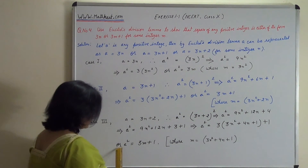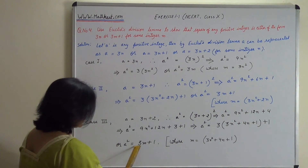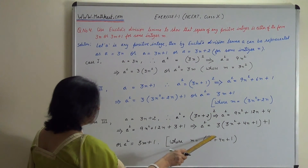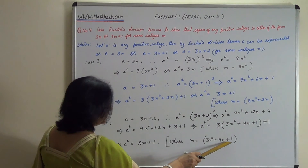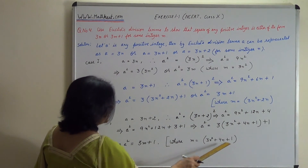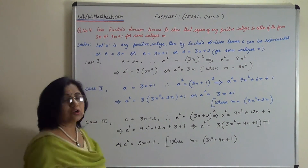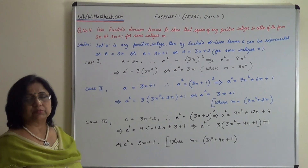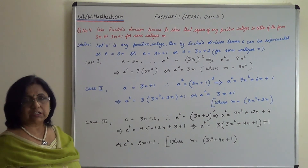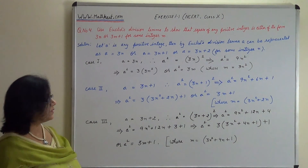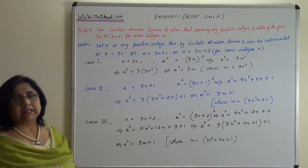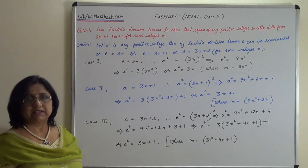So, a square equals 3m plus 1 where m equals 3n² plus 4n plus 1. When we divide a number by 3, three remainders are possible: 0, 1, and 2. In all cases, the square is either of the form 3m or 3m plus 1. This question is usually for 4 marks, so write it neatly.